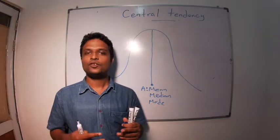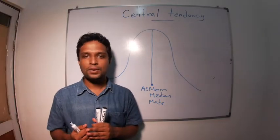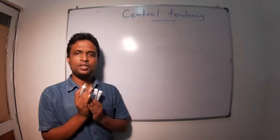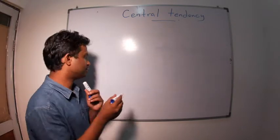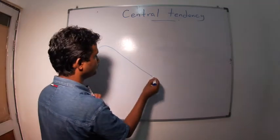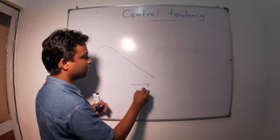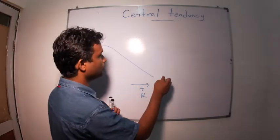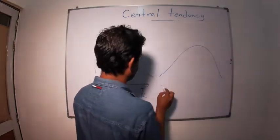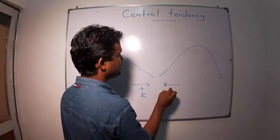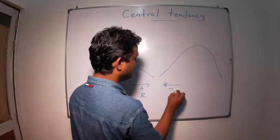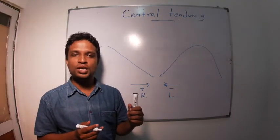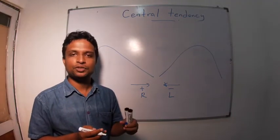But what will happen if the distribution is skewed? Skewed distribution can have two shapes. This is we call it positively skewed or skewed to right. Or we can have skewed to this side - negatively skewed or skewed to left.